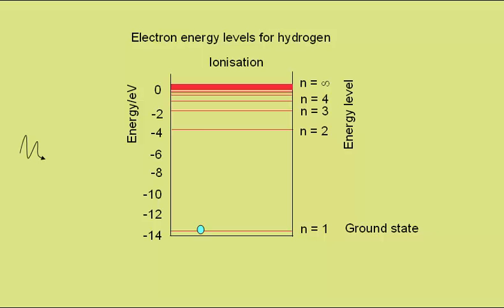So absorbing a higher energy photon could send it to n equals 3, an even higher energy photon to n equals 4, and so on. If there was sufficient energy, as here, the electron becomes free. We have had ionization.